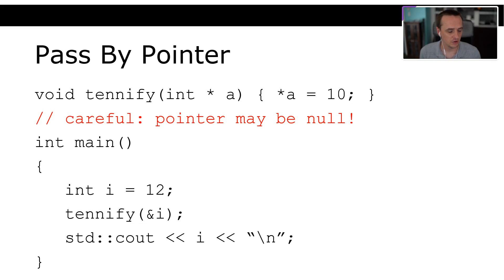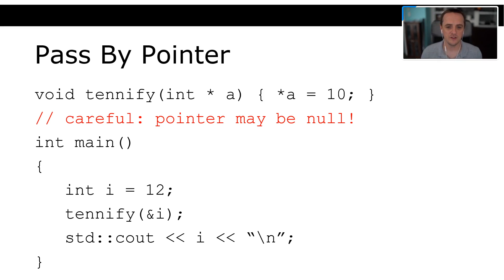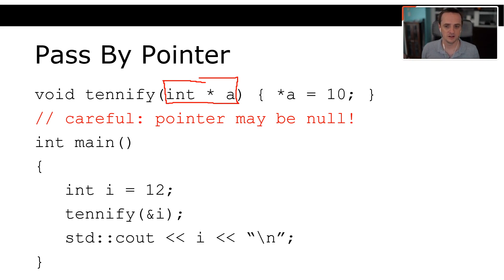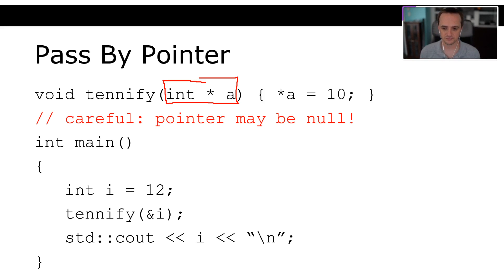But be careful — in Java you'd get a null pointer exception message; in C++ you just crash, likely a segfault. If this function gets passed a garbage pointer and we try to change the value, the program may crash at best, or silently corrupt memory at worst — giving undefined results later.